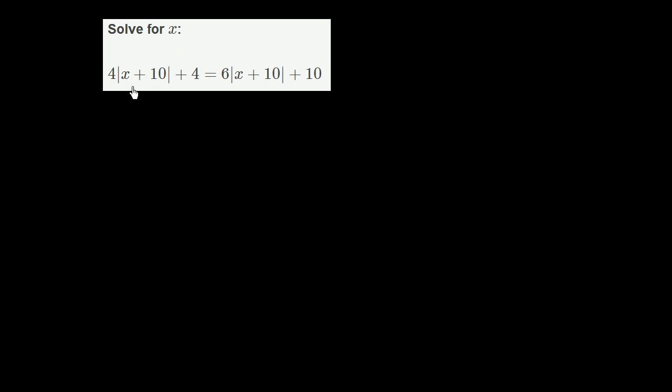So we're asked to solve for x. We have this equation with absolute values in it. It's 4 times the absolute value of x plus 10 plus 4 equals 6 times the absolute value of x plus 10 plus 10.